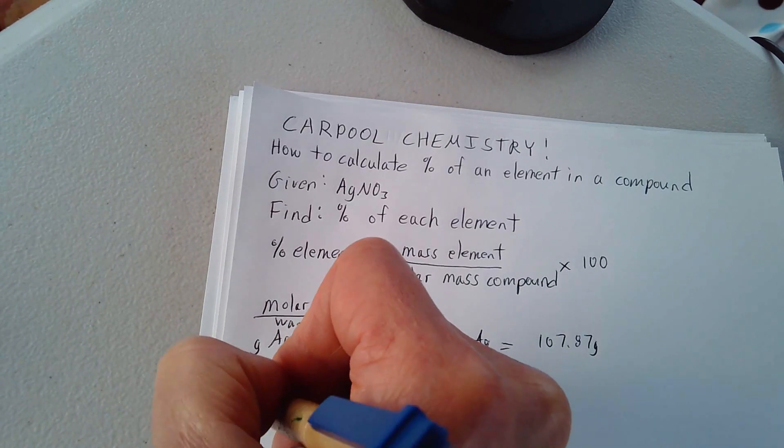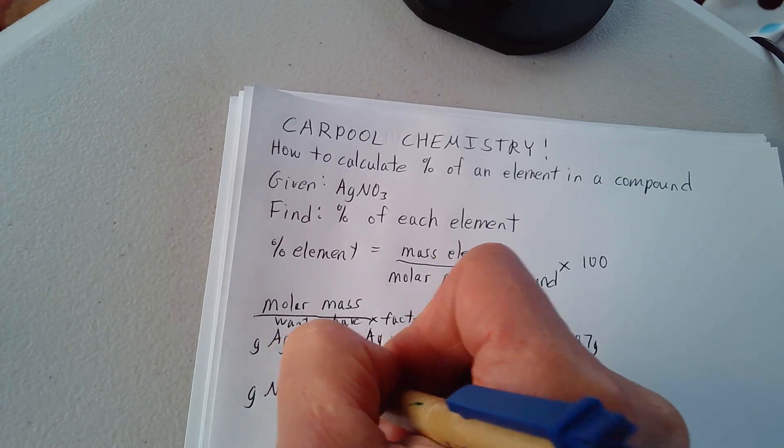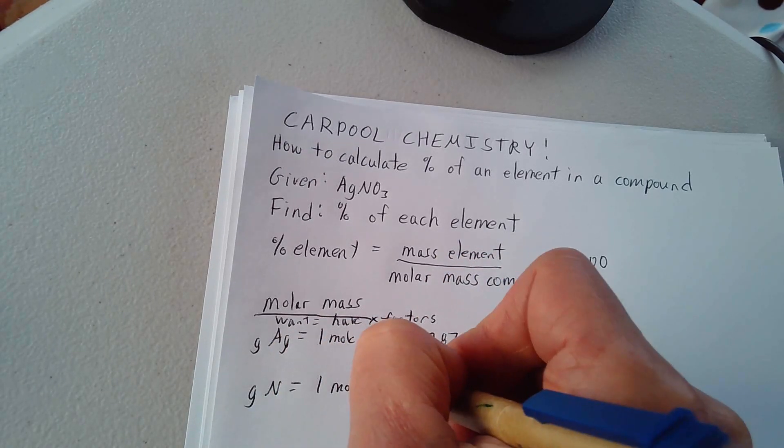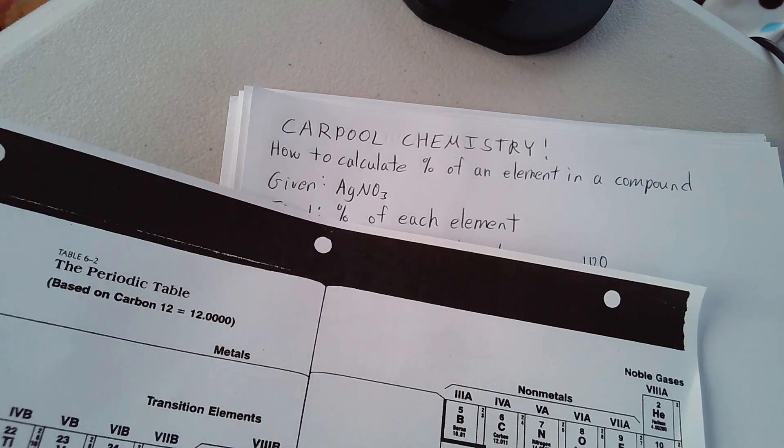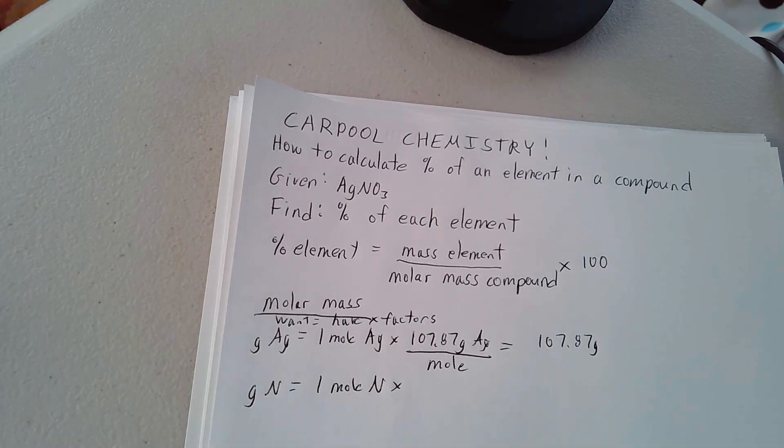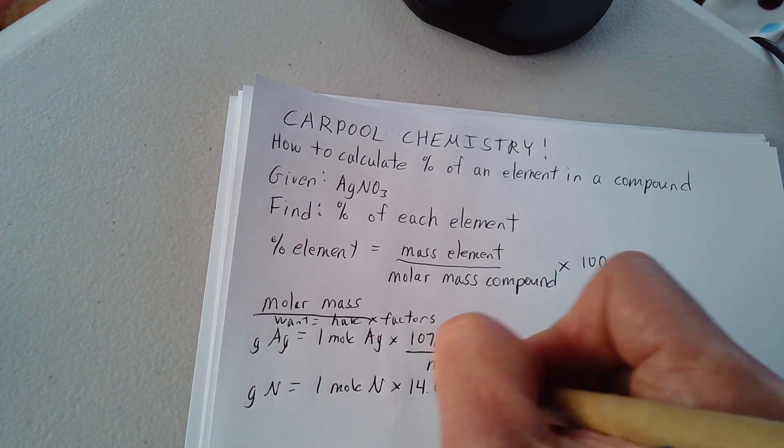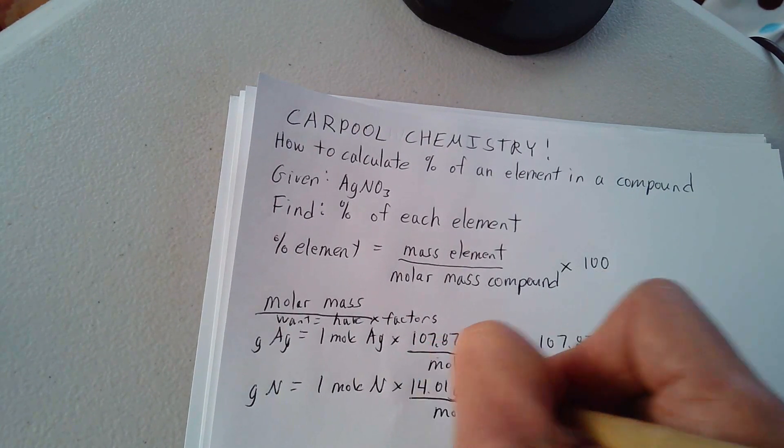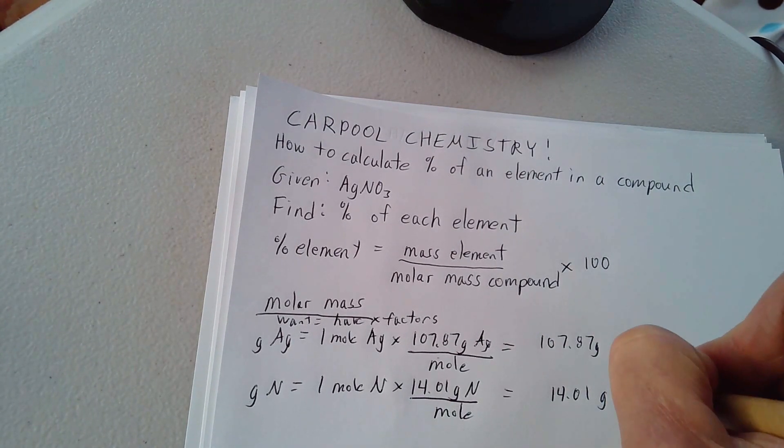Let's take a look at the grams of the next element, nitrogen. It's equal to one mole of nitrogen times, and nitrogen, we're looking at 14.01 grams per mole, 14.01 grams of nitrogen per mole, and so that's 14.01 grams of nitrogen.